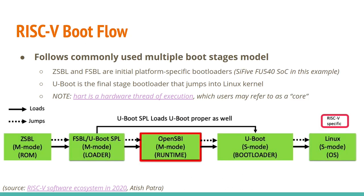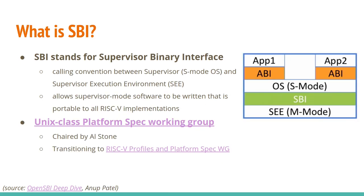The RISC-V boot flow is similar to what you've seen with ARM — you have the zero stage bootloader in the SOC ROM, then a small first stage bootloader that eventually goes into U-Boot as the final stage bootloader that jumps into Linux. Something you might not be familiar with on this diagram is OpenSBI. SBI stands for Supervisor Binary Interface and it's specific to RISC-V. It's the calling convention between the Supervisor mode OS like the Linux kernel and the Supervisor execution environment — the bare metal code in M mode. This allows Supervisor mode software to be written portably across all RISC-V implementations, so the Linux kernel architecture support isn't tied to specific RISC-V implementations — it's abstracted away by SBI.